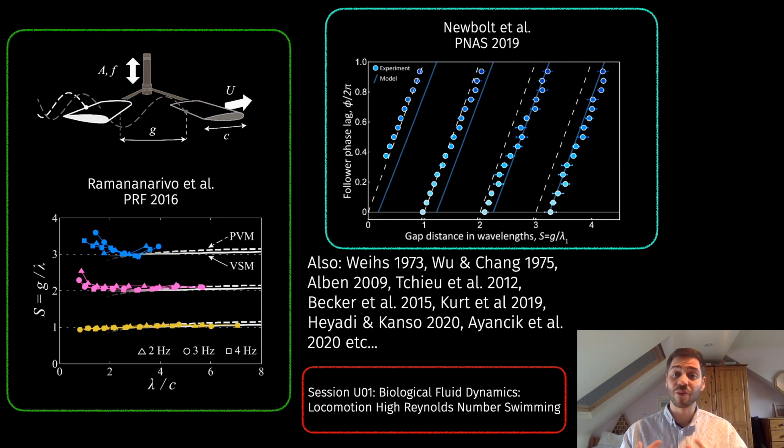It's a similar story when the wings are not in phase but there's a phase lag between them. Again, now the schooling number is on the x-axis, and we see that these markers almost always lie on these linear but periodic curves.